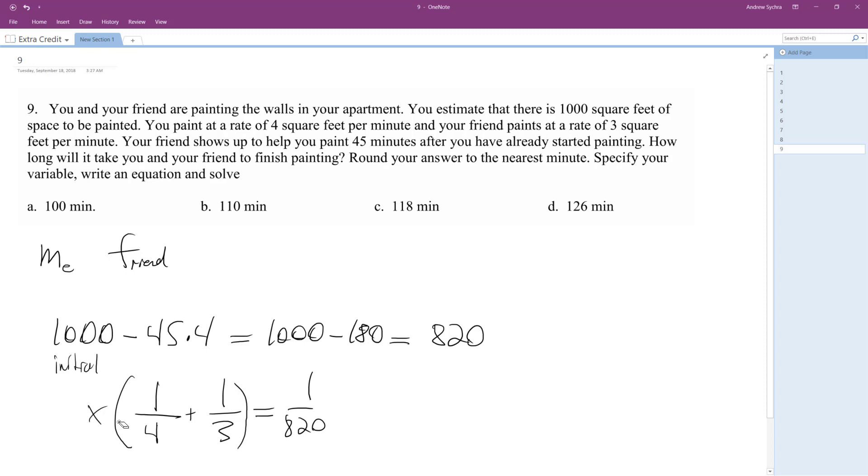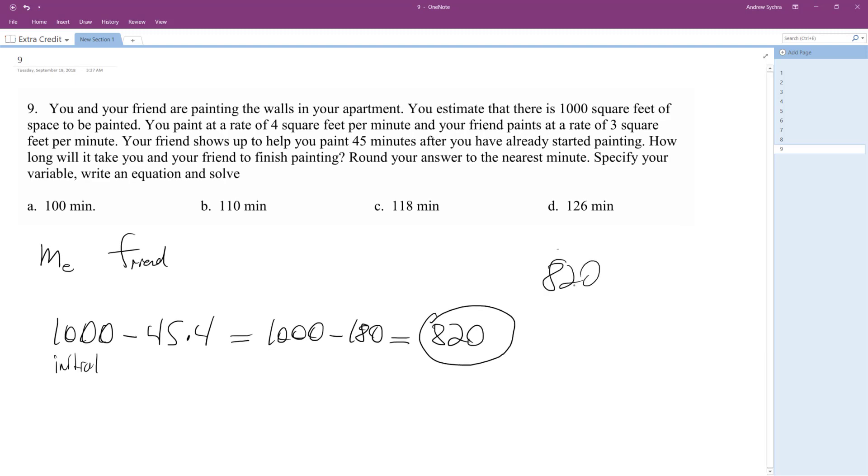It's not necessarily a trick question, but you need to find out how long it takes each of you to paint 820. So 820 divided by 4 and then 820 divided by 3.